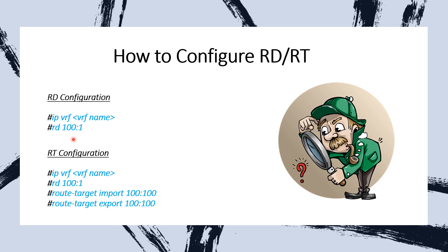We define the RD value — in our case we've defined 100:1. The convention used is to configure the RD with an AS number followed by a specific number for that particular VRF or client terminating on that PE for a specific VRF.